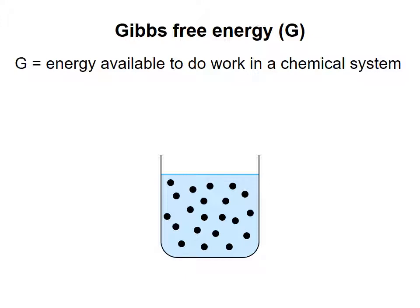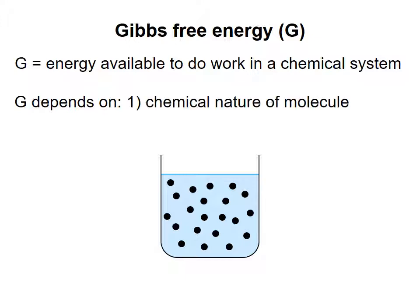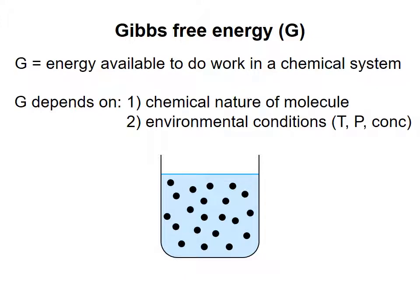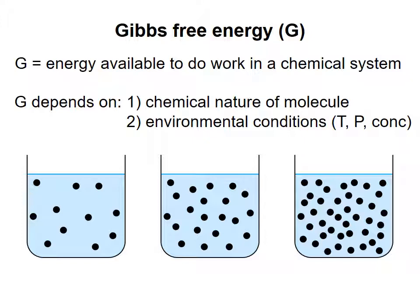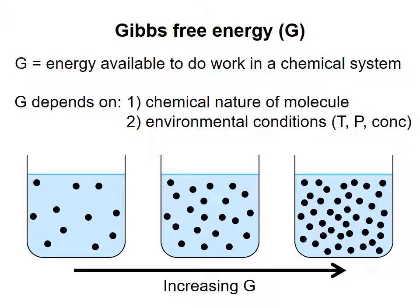For a chemical system — that is, a chemical compound dissolved in water — the value of G depends on two major factors: first, the chemical nature of the compound, and second, the environmental conditions. The nature of the molecule can't be changed; it's defined by its chemical structure. But the environmental conditions, namely the temperature, pressure, and concentrations of the molecules, can vary. Normally in biochemical reactions, the most important of these environmental conditions to consider is concentration. The more concentrated a molecule is in solution, the greater its Gibbs free energy. So of the solutions represented here, the one on the left has the lowest Gibbs free energy, and the one on the right has the highest.